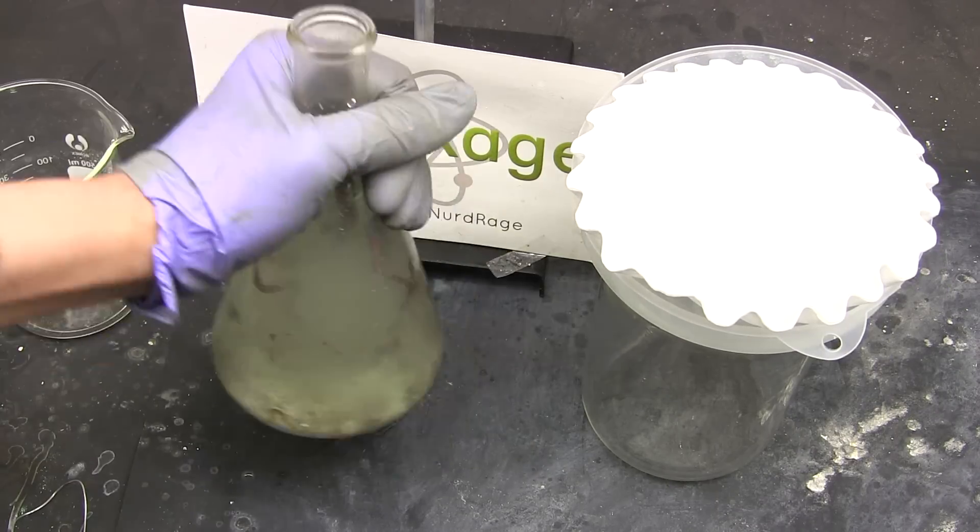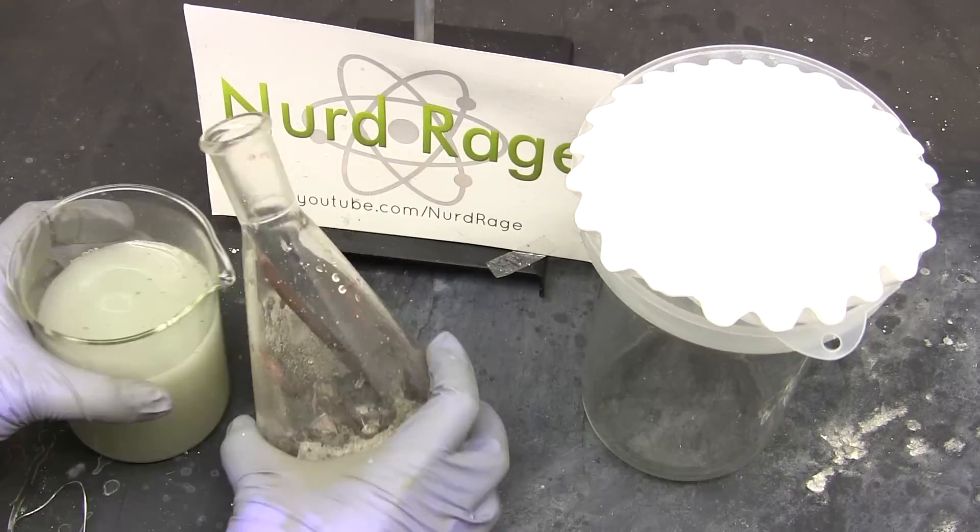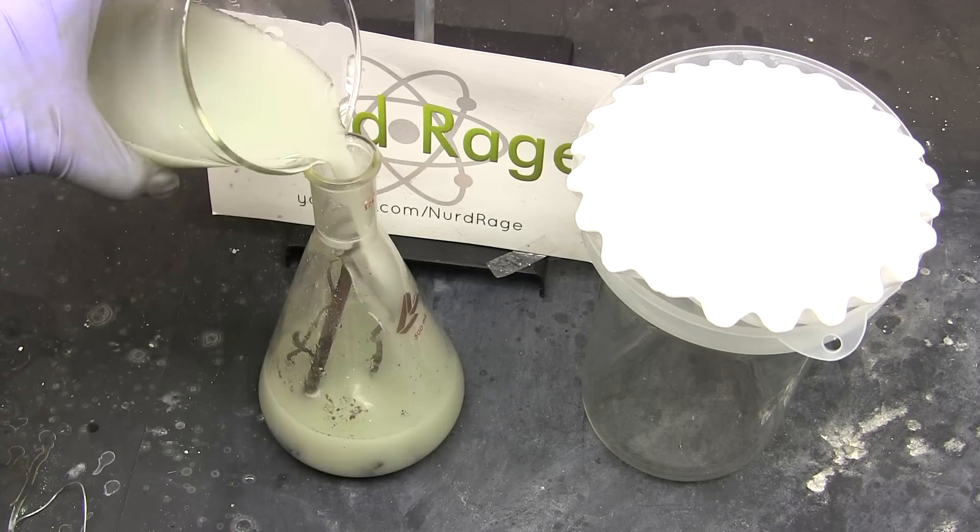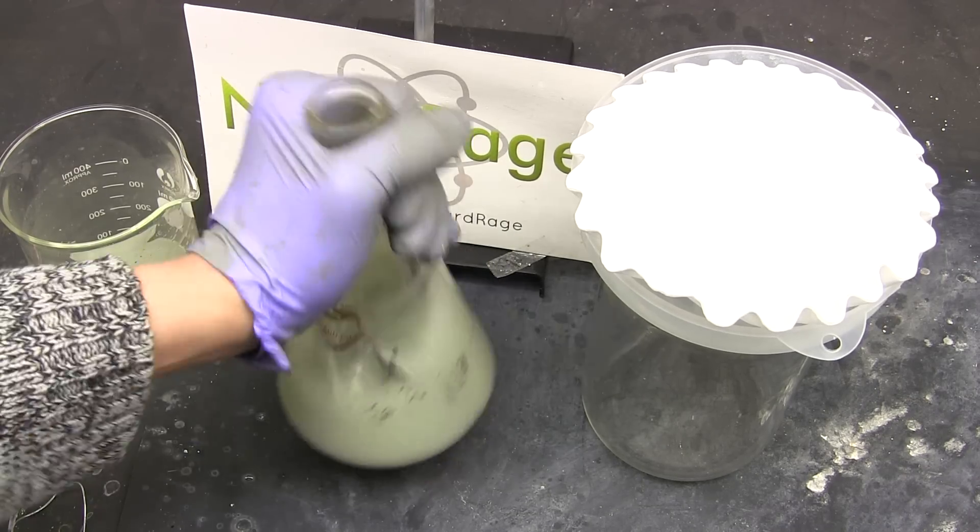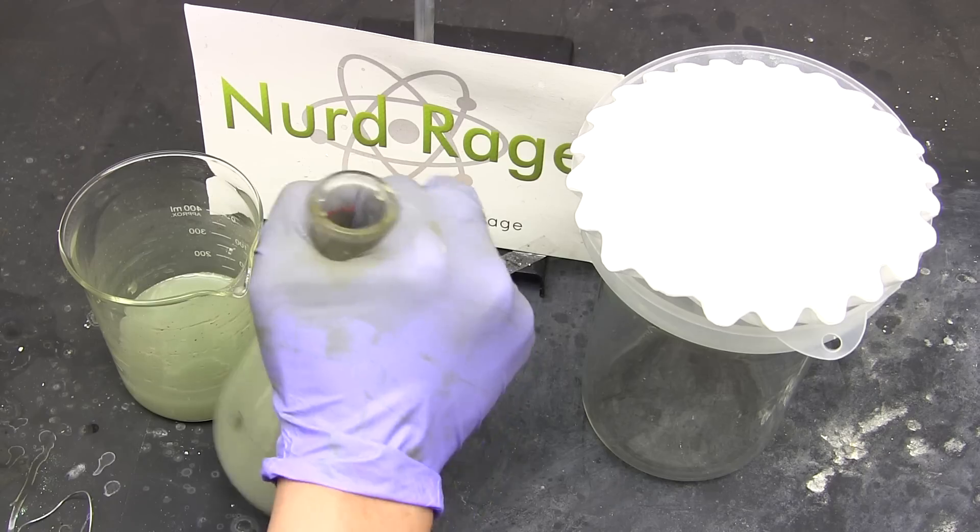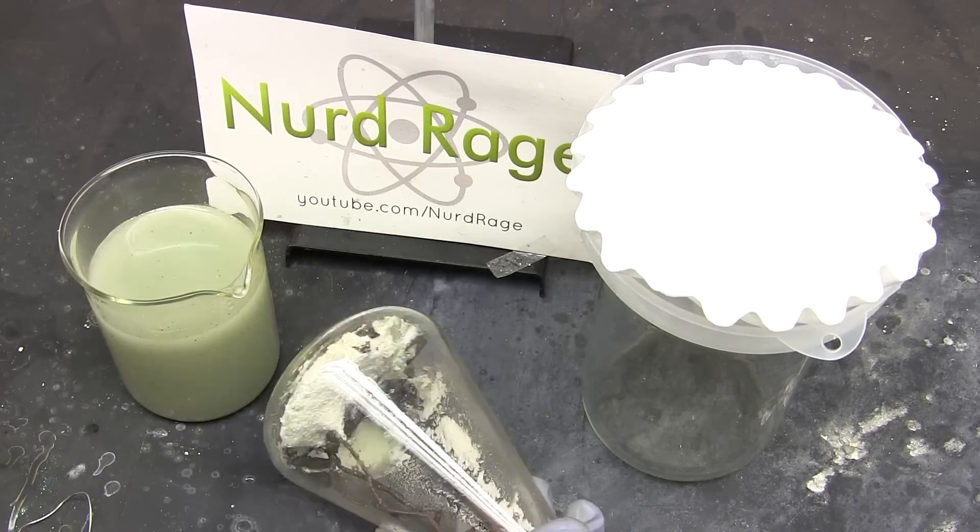Now take the residue and at least three times its mass of water. If you don't know the mass then don't worry, just add enough water to equal the original starting volume. The cake is fairly solid so you're going to have to shake it a lot to break it up. We're trying to dissolve the green iron 2 chloride and separate it from the insoluble copper 1 chloride.